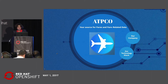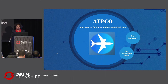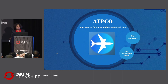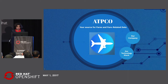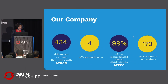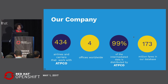We are essentially owned by the airlines, so we are a neutral body for the airline industry where they enter their fares, their restrictions, and their fee data into our system, and we distribute the data. Our consumers range from small new airlines to big established ones, and from Google to Expedia. We have about 434 carriers working with us, four offices around the world, 99% of airline intermediate data goes through us, and we have about 173 million fares in our database.